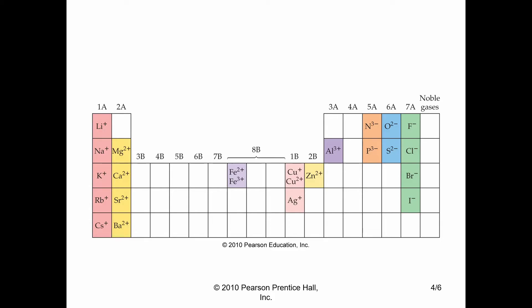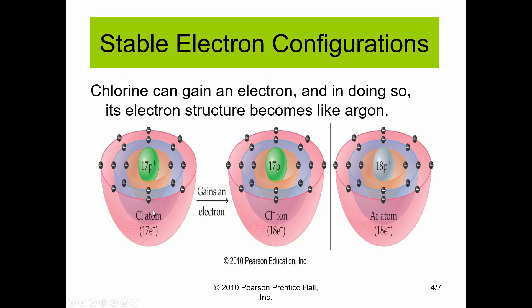Now let's take a look at chlorine. Chlorine is in group 7, meaning in order for it to obtain a full octet — 8 electrons in its outermost shell — it needs to gain 1 electron. Looking at the electron configuration of chlorine, it has 7 valence electrons. In order to get its full octet, it needs to gain 1 electron. In the process of gaining 1 electron, it then has an electron configuration similar to argon, with 18 electrons total and 8 in its outermost shell.